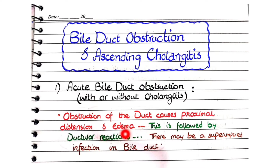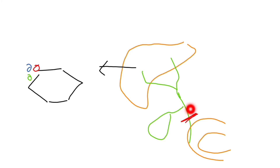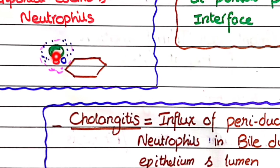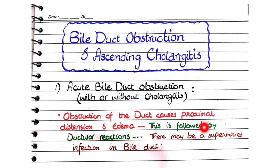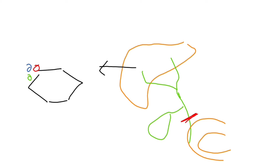Translating the keywords into morphology: the first feature — obstruction causing proximal distension and edema — appears as distending ducts and ductules, periportal edema, and neutrophils. Due to obstruction, there is distension of ducts upstream and of ductules at the corners of hepatocytic lobules, with periportal edema and neutrophils. The second feature — ductular reactions — appears as duct-like proliferating structures at the portal-to-parenchymal interface.